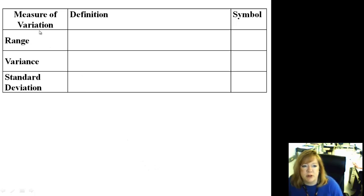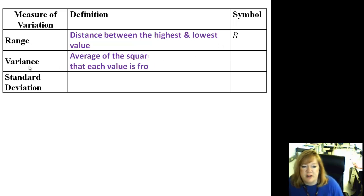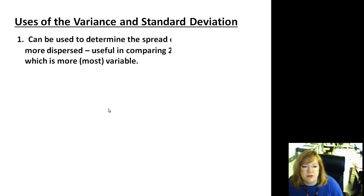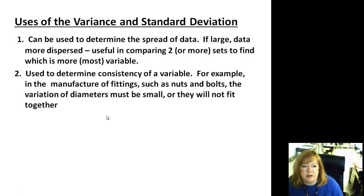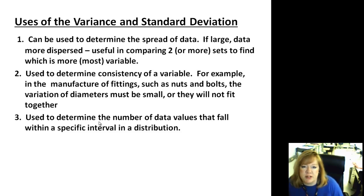Alright, we're to the very end. Here's our measure of variation. Just to sum up, the range is the distance between the highest and the lowest, and the symbol is R. The variance is the average of the squares of the distance that each value is from the mean. That's these two symbols, this little fishy guy and s squared. Standard deviation is just the square root of the variance, which is just the fish and s. What are the uses of variance and standard deviation? Well, they can be used to determine the spread of the data. If it's large, it's more dispersed. And you can also compare two sets of data. It's also used to determine consistency of a variable. For example, if you're manufacturing nuts and bolts, the variation of diameters has to be small. Those things aren't going to fit together. It's used to determine the number of data values that fall within a specific interval of distribution, and it's often used in inferential statistics. There we go. Have a good day, and I will see you soon.